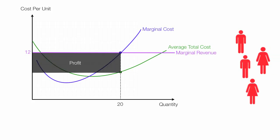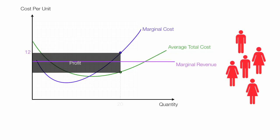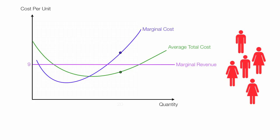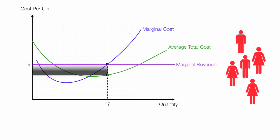This confirms that profit is maximized at MC equals MR. When there are large profits, new people enter the market and force the price down. In this case, price goes down to $9. The producer still produces where marginal cost equals marginal revenue, now at a quantity of 17. Profit is smaller and is shown by the gray rectangle.